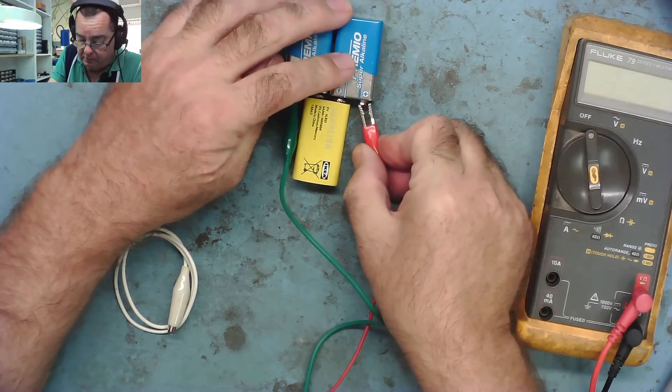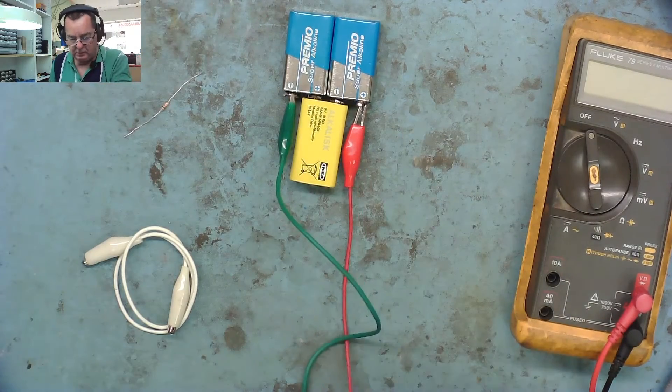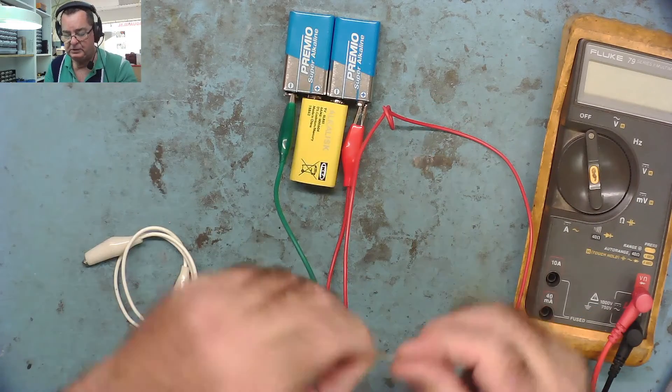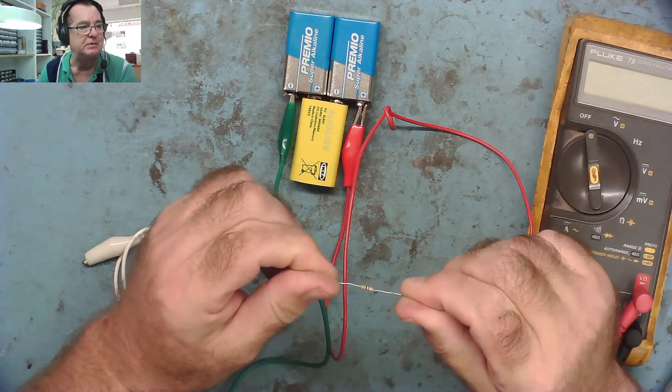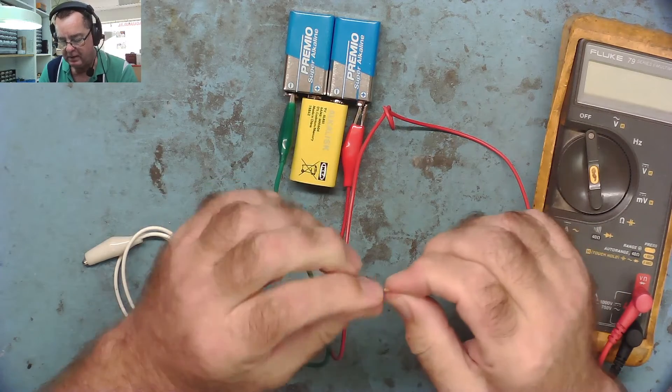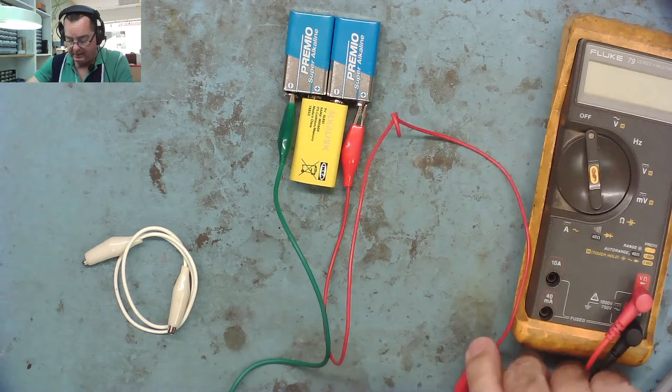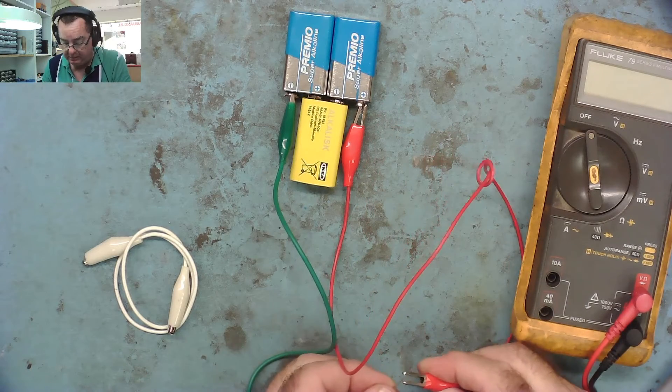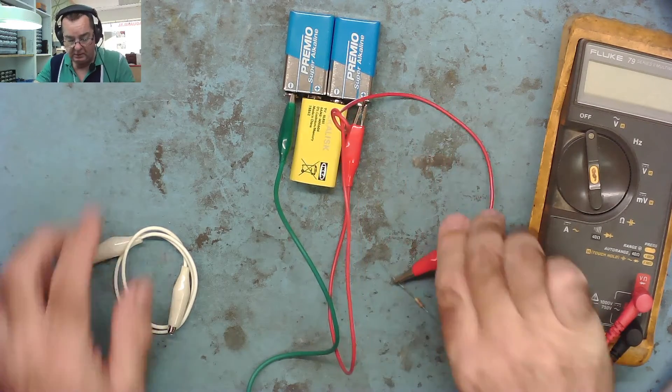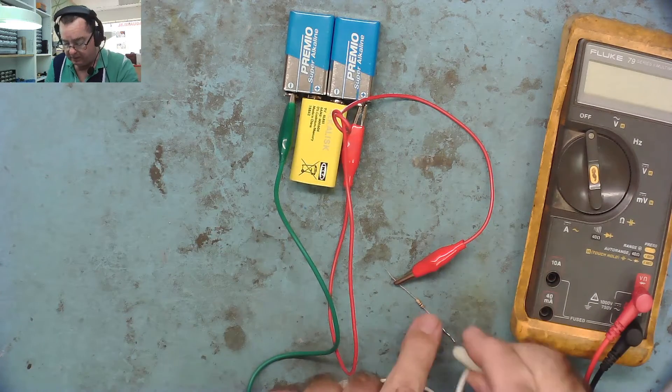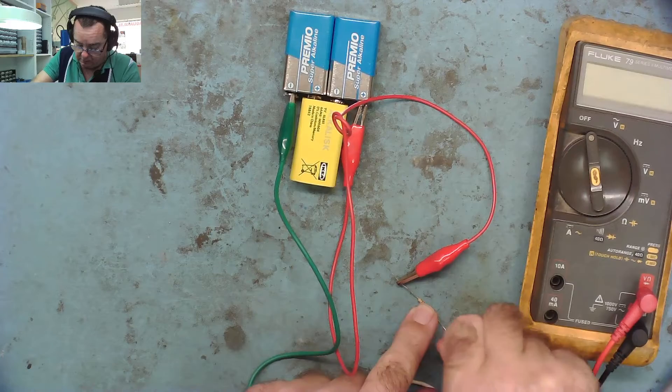Now we're going to take the resistor. This is a one kilo-ohm resistor - the value isn't critical, so between one and two kilo-ohms will be fine. We'll connect the positive to the resistor, and then from the resistor we're going to connect our other crocodile clip lead.